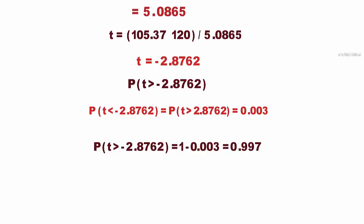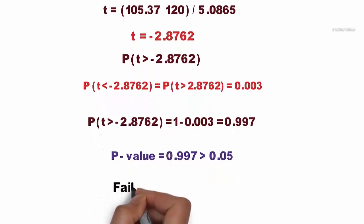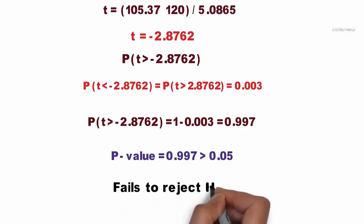P-value equals 0.997 greater than 0.05. Therefore, from the conclusion, if P greater than 0.05, the null hypothesis is accepted or fails to reject. Hence, the conclusion is: fails to reject H0.